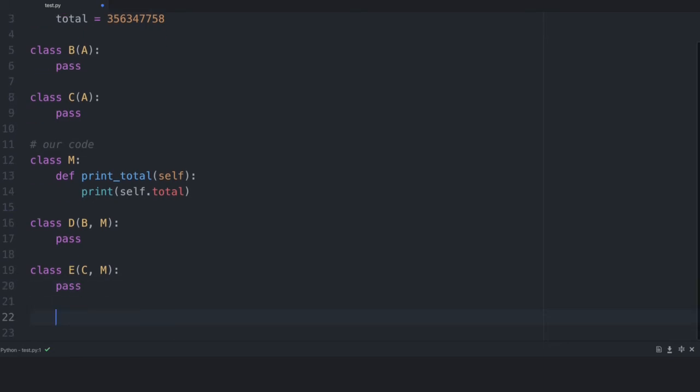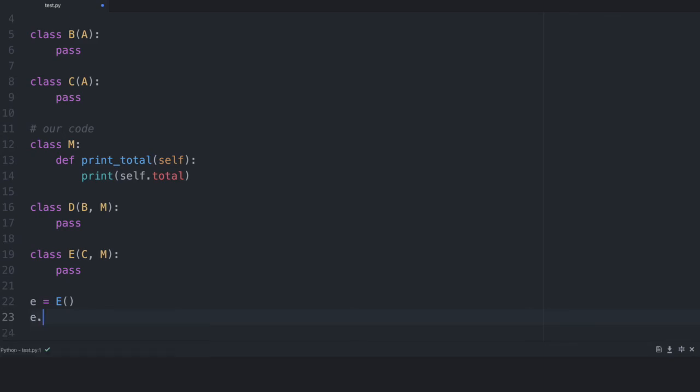Now let's test this by creating a class instance from E. At this moment I can call printTotal which comes from our mixin but uses our total from class A. So let me execute this code and here is our total.